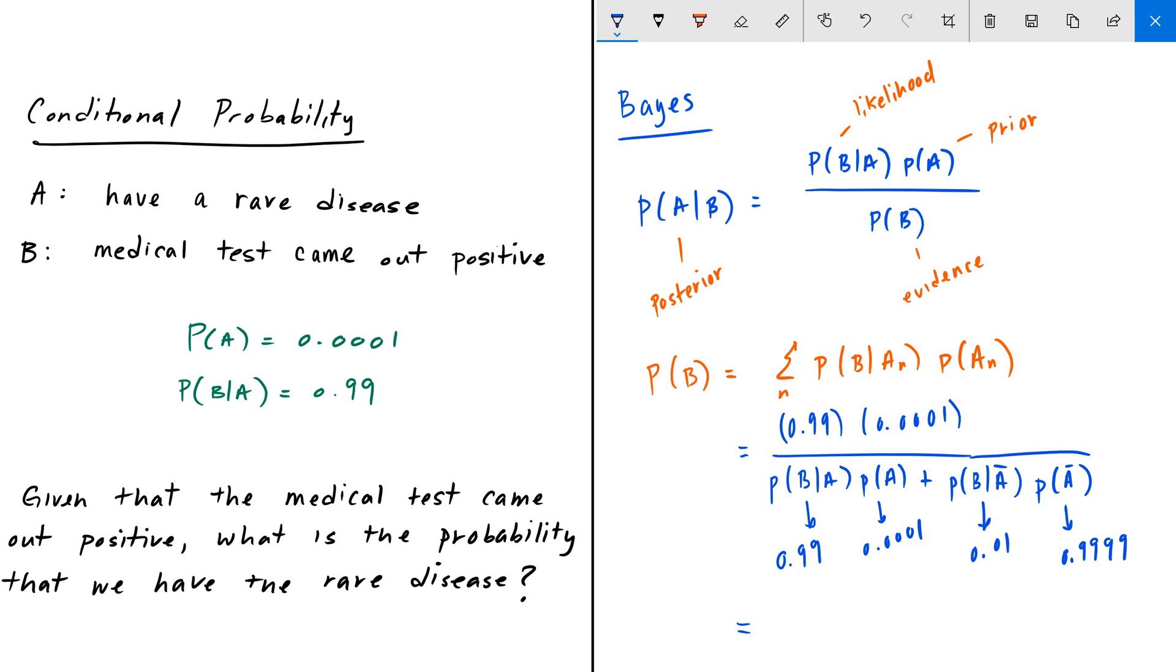So, the probability of A given B - that is, given that we know that our test came out positive, what is the probability of us having that rare disease - is given by 1 over 102, which is roughly 0.0098. So, about 0.01. And that is our answer.